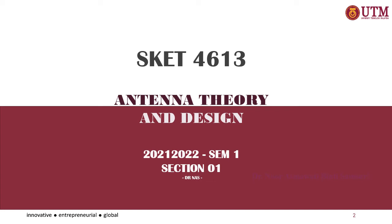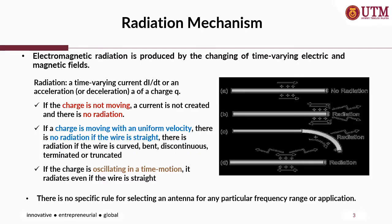Assalamualaikum and a very good afternoon. Radiation mechanism: electromagnetic radiation is produced by the changing of time-varying electric and magnetic fields due to the acceleration or deceleration of charges Q.